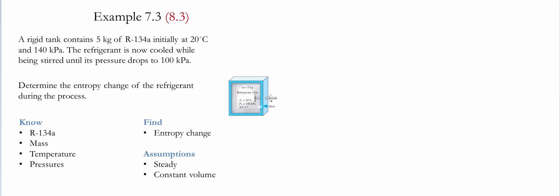A rigid tank contains 5 kilograms of R134A initially at 20 Celsius and 140 kilopascals. The refrigerant is now cooled while being stirred until its pressure drops to 100 kilopascals. We need to determine the entropy change of the refrigerant during this process.